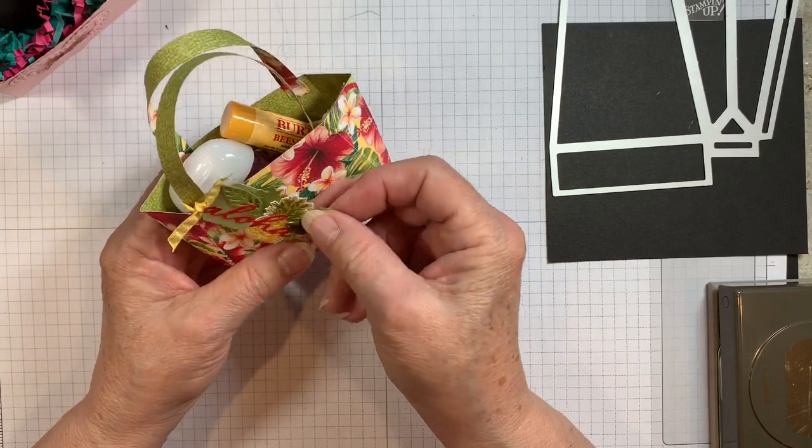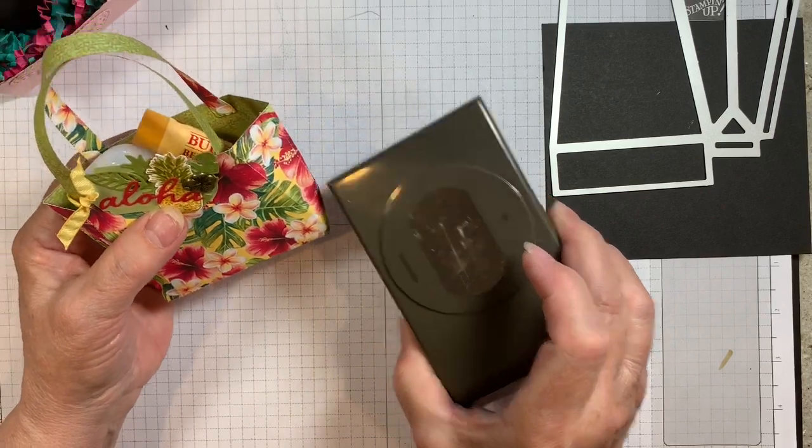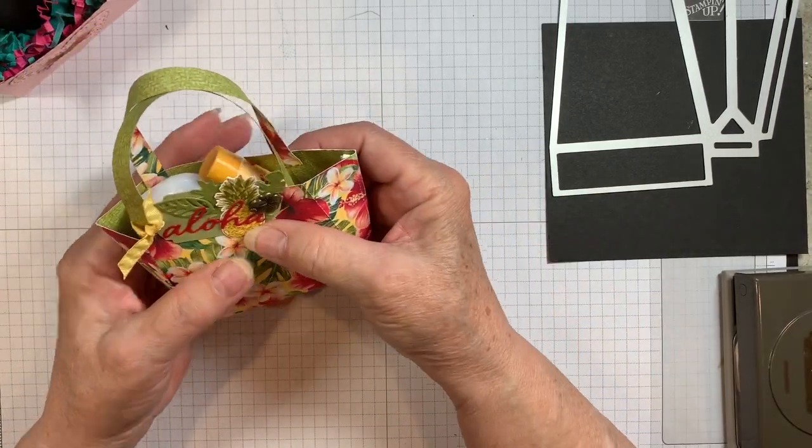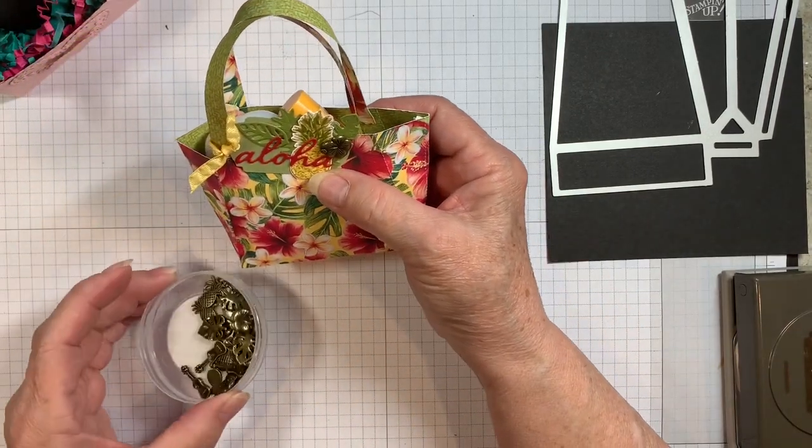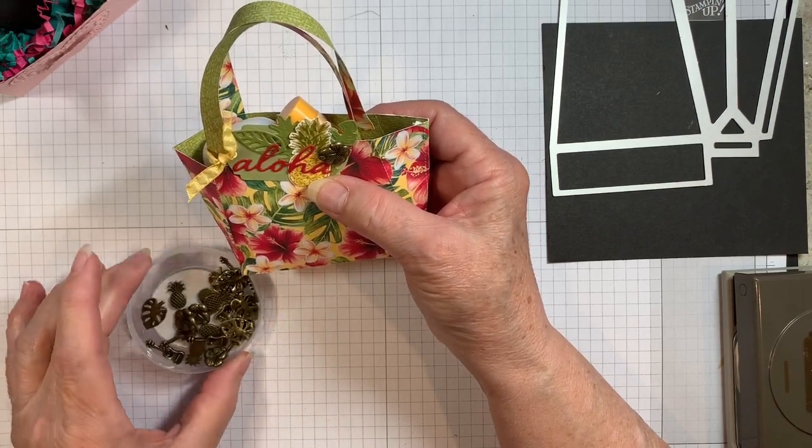Now this one, we use the little punch tag on this one and also we added some of our cute little charms, Tropical Oasis trinkets on there.